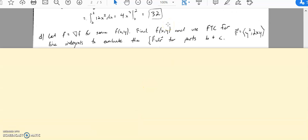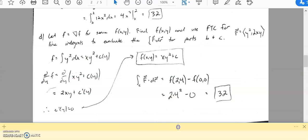Okay, next one here. I want you to find the potential function that would go with that vector field. So let capital F equal del f for some f of x comma y. Find f of x comma y and use FTC for line integrals to evaluate the integral of f dotted with dr from parts b and c. So I kind of smashed two problems from the previous video into one here. Go ahead and give it a shot.